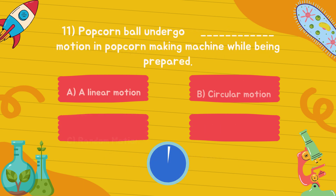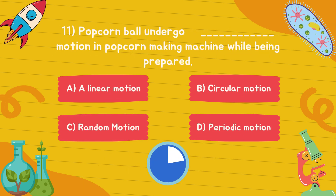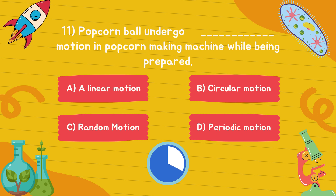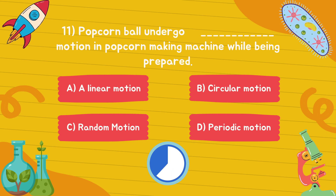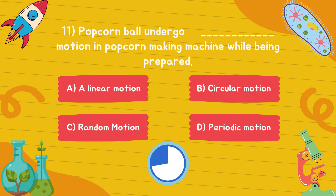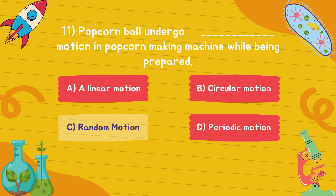Popcorn balls undergo dash motion in a popcorn making machine while being prepared. Answer is option C, random motion.